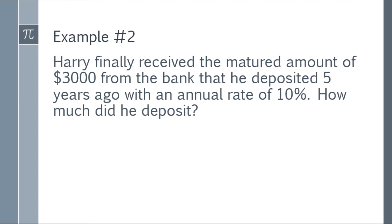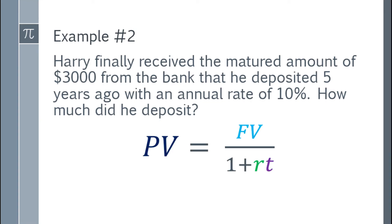Okay, so let's go to example number 2. Harry finally received the matured amount of $3,000 from the bank that he deposited 5 years ago with an annual rate of 10%. How much did he deposit? So in this question, you have the future value, you have the rate and you have the time. So we can use the formula.